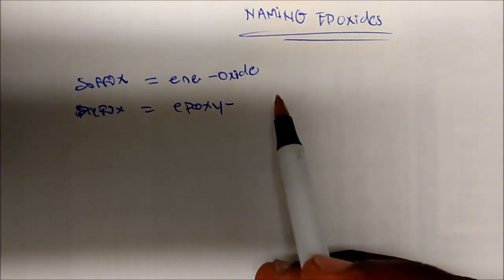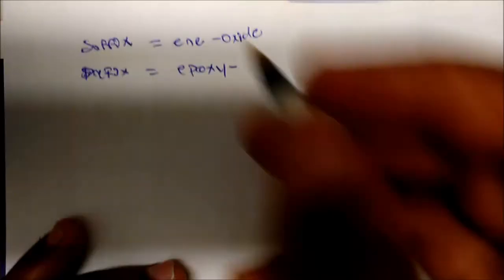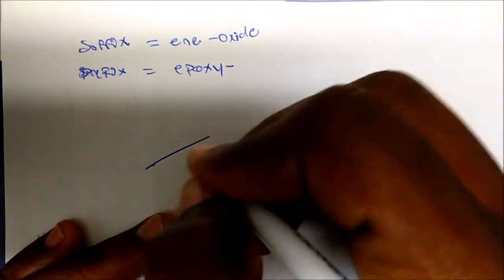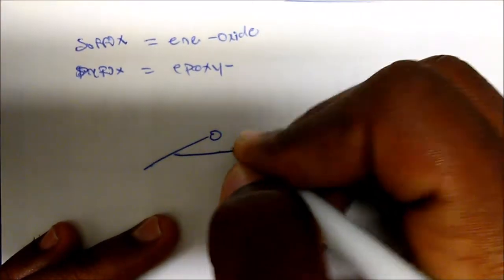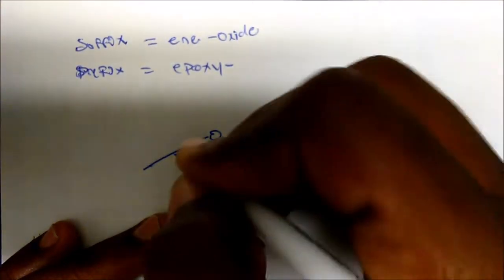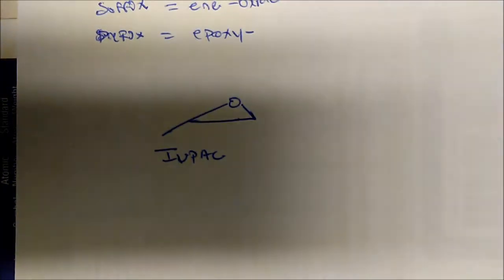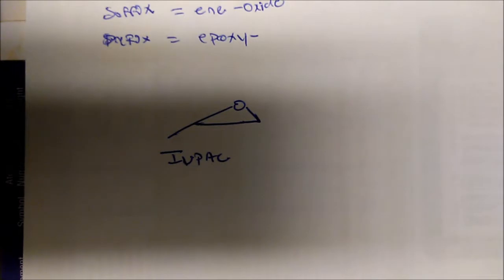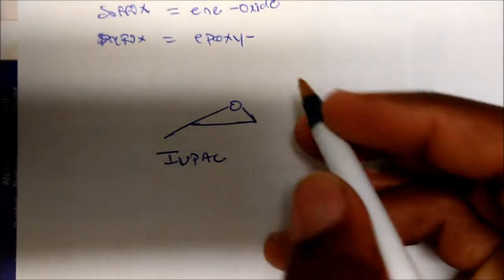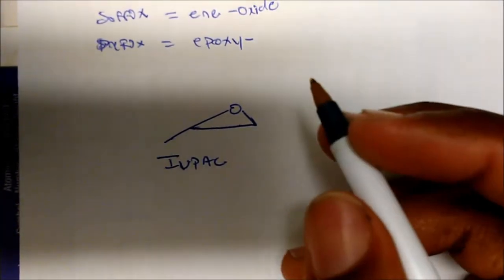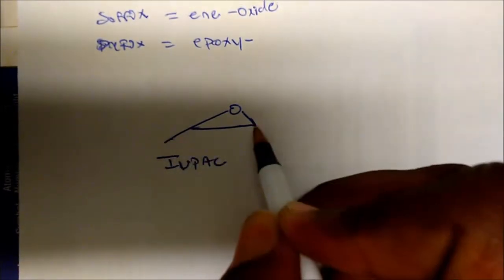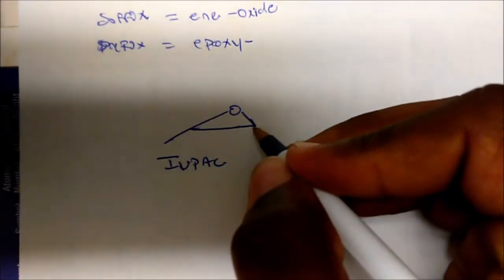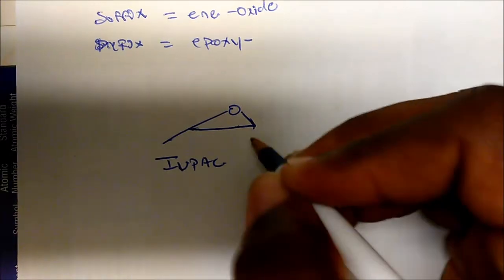So here's our first molecule. What is the IUPAC name for this? Well, just as we said, the IUPAC name is always based on the longest continuous carbon chain. We want to give the epoxide the lowest number possible, so I could start from either end — I'm going to start from here because this will give the epoxide the lowest number possible.